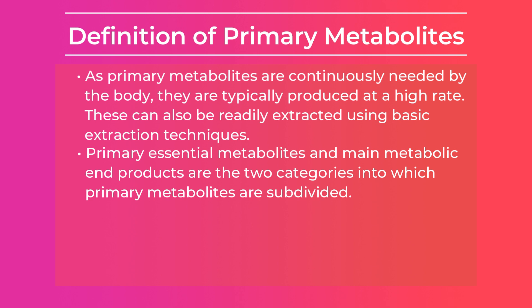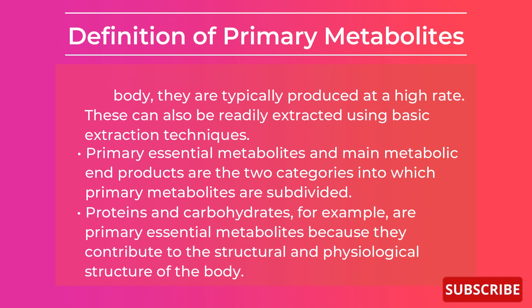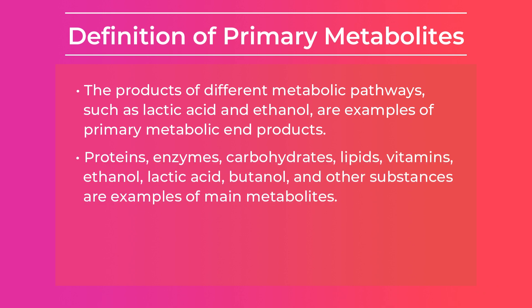Primary metabolites are subdivided into two categories: primary essential metabolites and main metabolic end products. Proteins and carbohydrates are primary essential metabolites because they contribute to the structural and physiological structure of the body. Products of different metabolic pathways such as lactic acid and ethanol are examples of primary metabolic end products. Proteins, enzymes, carbohydrates, lipids, vitamins, ethanol, lactic acid, butanol, and other substances are examples of main metabolites.